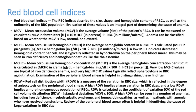MCV, MCH, MCHC, and RDW (red cell distribution width) are all called red blood cell indices. They appear in a complete blood count printout and are important only when anemia is present. MCV is mean corpuscular volume — the volume of the patient's RBCs. MCH is mean corpuscular hemoglobin — average hemoglobin content per RBC. MCHC is mean corpuscular hemoglobin concentration — average hemoglobin concentration per RBC.